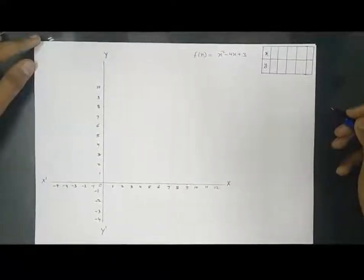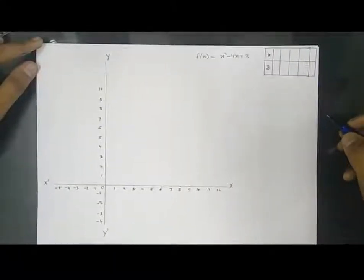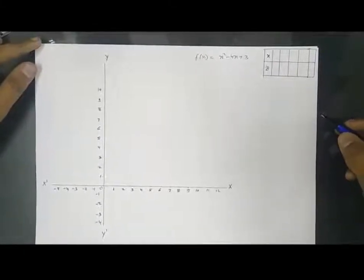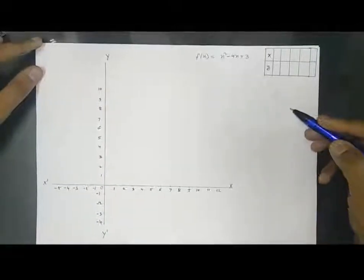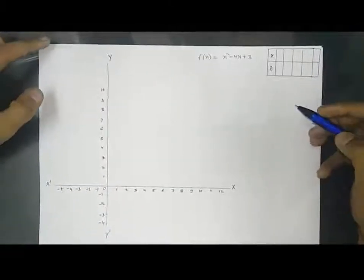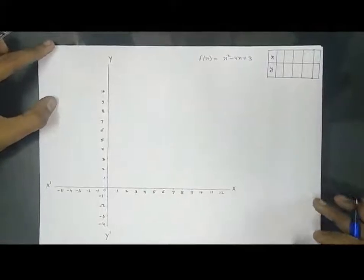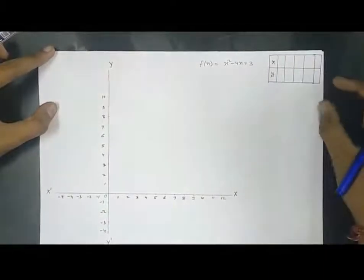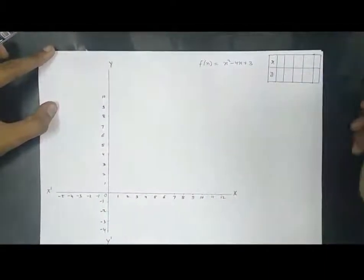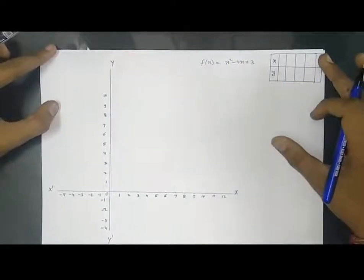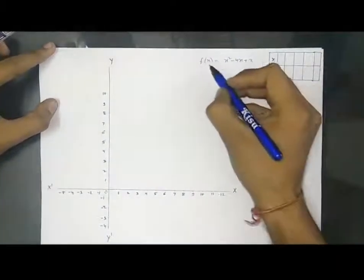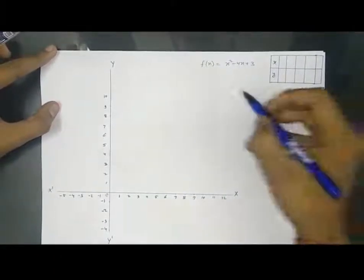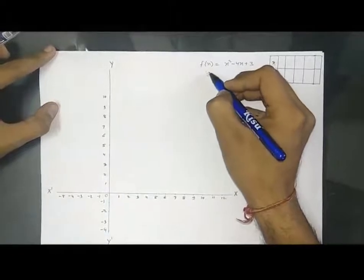Today I will discuss the graph of quadratic functions — how to draw the graph, how to read it, and the different situations we can encounter. I have a Cartesian coordinate plane and a quadratic function f(x) = x² - 4x + 3. The process is simple: we put in different values of x and get the corresponding values of y. Setting f(x) = y, we have y = x² - 4x + 3.